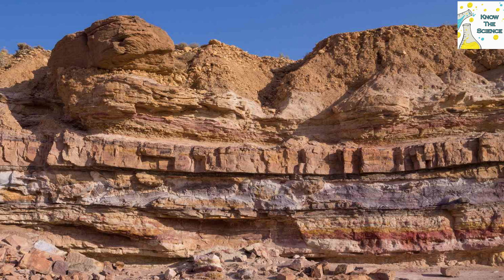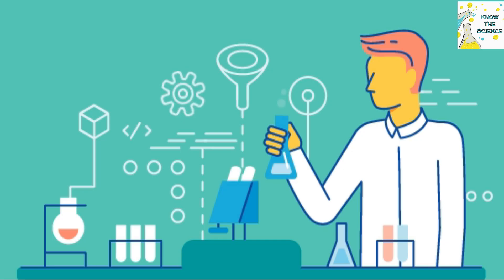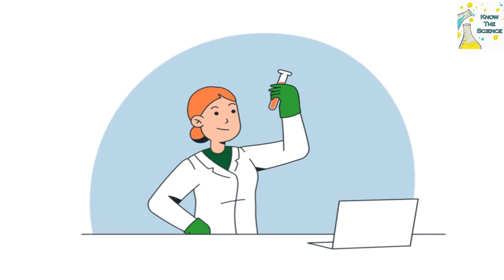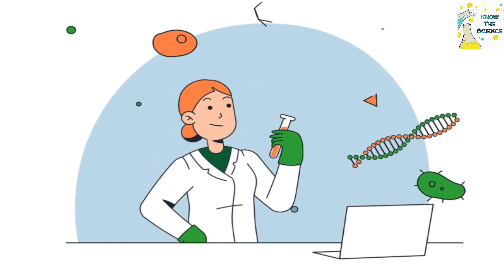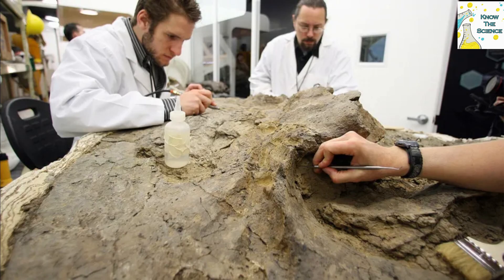Nonetheless, even though this technique did not give scientists the precise number they were looking for, it did suggest that Earth was most likely billions of years old and not just millions as was previously thought. As advances in chemistry, geology, and physics continued, scientists found a method by which the absolute age and actual number of years of a rock or mineral sample could be determined. This method is called radiometric dating and it involves the decay or breakdown of radioactive elements.